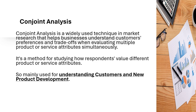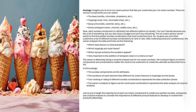Conjoint analysis is a method for studying how respondents value different product or service attributes, and it is mainly used for understanding customers and new product development. Key keywords to focus on are the attributes — the components — and then the variation on each element, which are the levels. Rankings or ratings of different attributes represent the data collection phase.